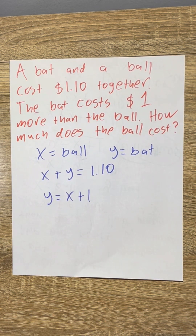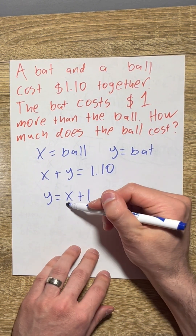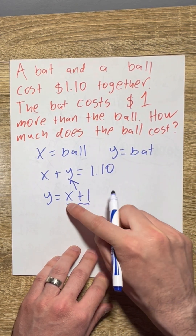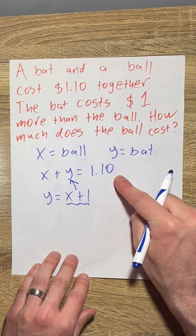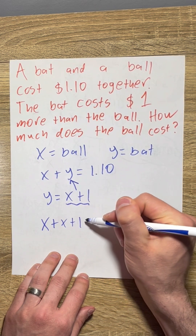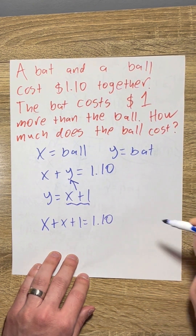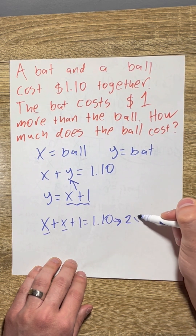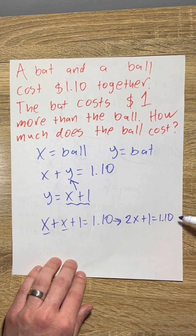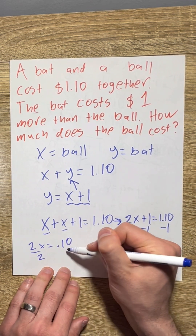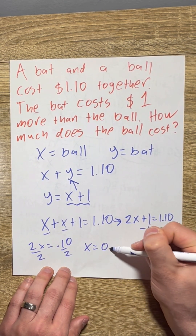In order to solve an equation, you can only have one variable. So I'm going to substitute x plus 1 in for y, because they're equivalent, and now we only have x variables in the first equation. I'll rewrite it as x plus x plus 1 equals $1.10. Collecting like terms: x plus x is 2x, so 2x plus 1 equals 1.10. Subtracting 1, we get 2x equals $0.10. Dividing by 2, x equals $0.05.